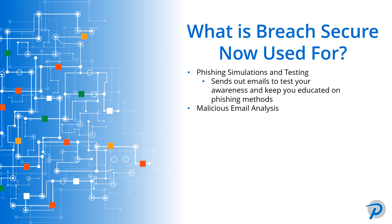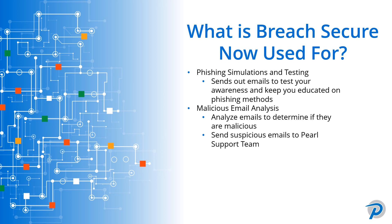The next thing it's used for is malicious email analysis. This is where any email that comes to your inbox you will be able to submit to the tool, and it'll run through an analysis to help you identify if it is a malicious email or if it's something legitimate from a legitimate sender. In the event that you have any suspicious emails and are still unsure whether you should interact with it or not, there is a button built into it that will allow you to send it to our Pearl support team, and they'll be able to assist you in making that final determination on what to do with that email.